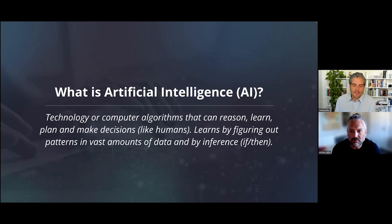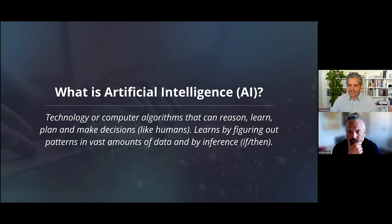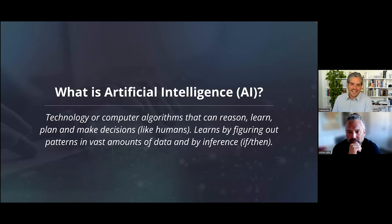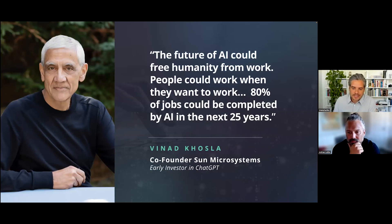Artificial intelligence is any technology or computer algorithm that can reason, learn, plan, and make decisions like humans. It learns by figuring out patterns in vast amounts of data and by inference — if/then statements. Generative AI takes information from all over the internet — trillions of pieces of data — and uses it much like a human brain, narrowing down everything known about a topic and predicting an answer. As more information gets loaded into these algorithms, it becomes quicker and smarter than ever before.